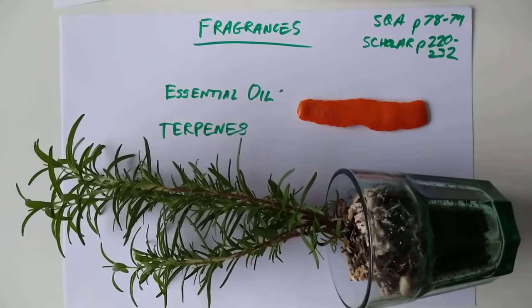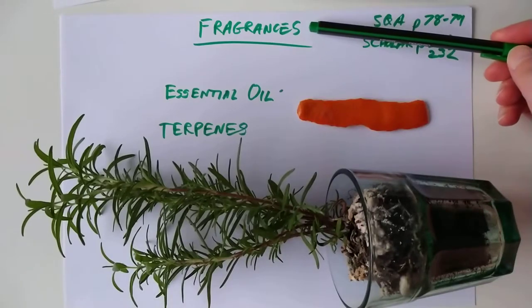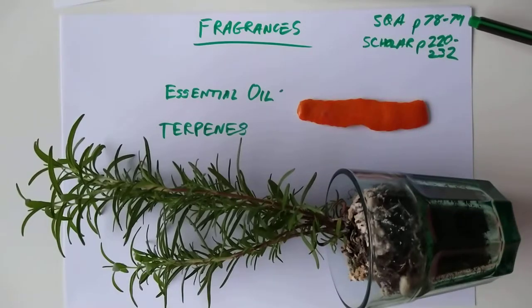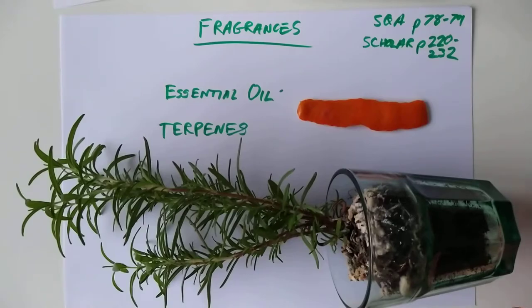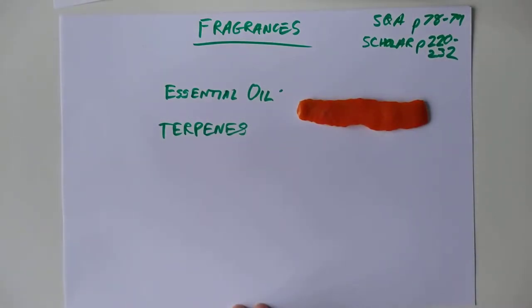Good afternoon folks, welcome back to Higher Chemistry. Super short one today, we're dealing with fragrances, which is SQA pages 78 to 79. Scholar, that's a bit optimistic for Scholar, honestly, there's like a handful of learning outcomes in this one. We have a piece of orange peel and we have a rosemary plant. And I would like to start, well I was going to take my props away and start with a couple of definitions.